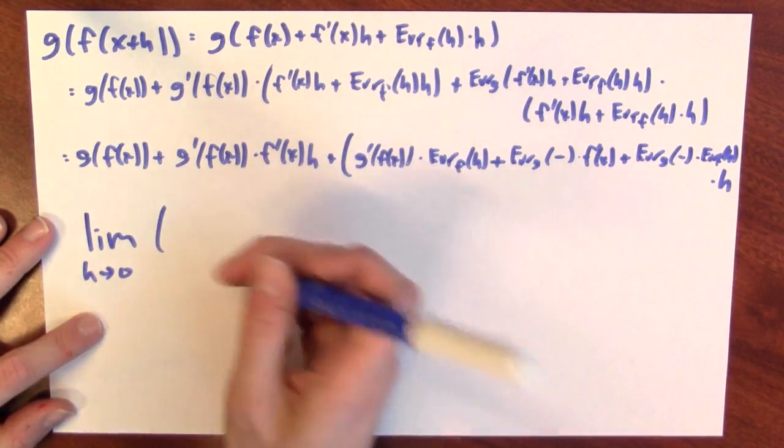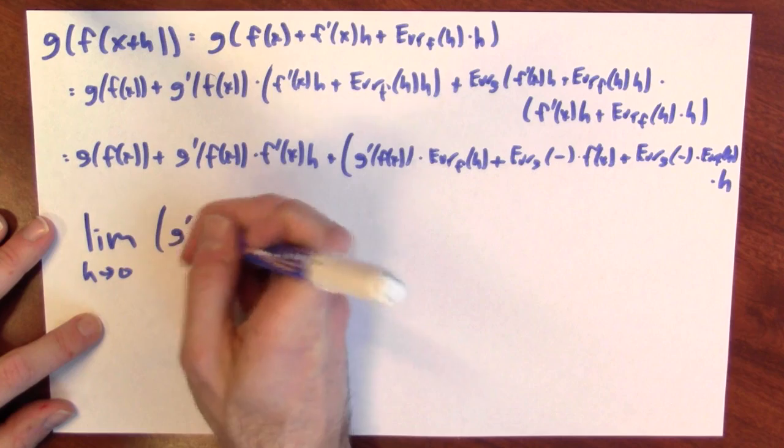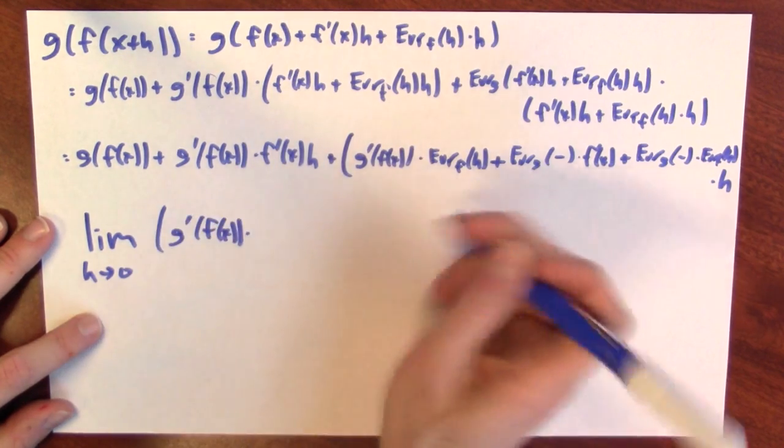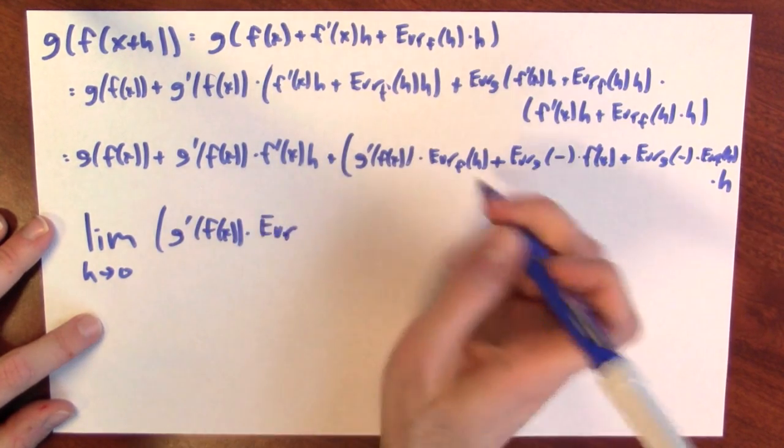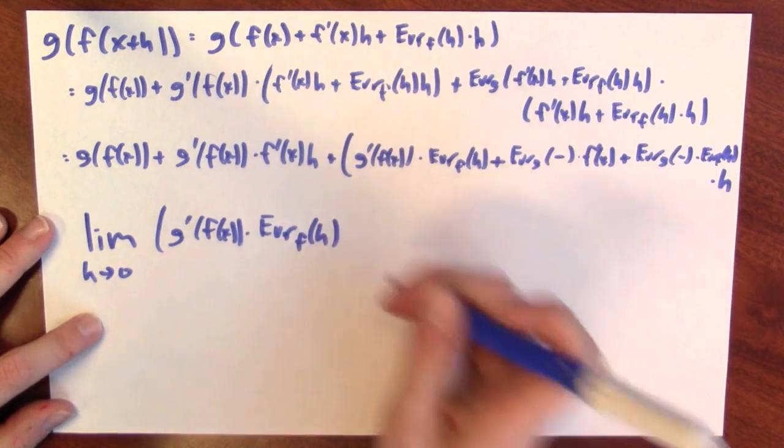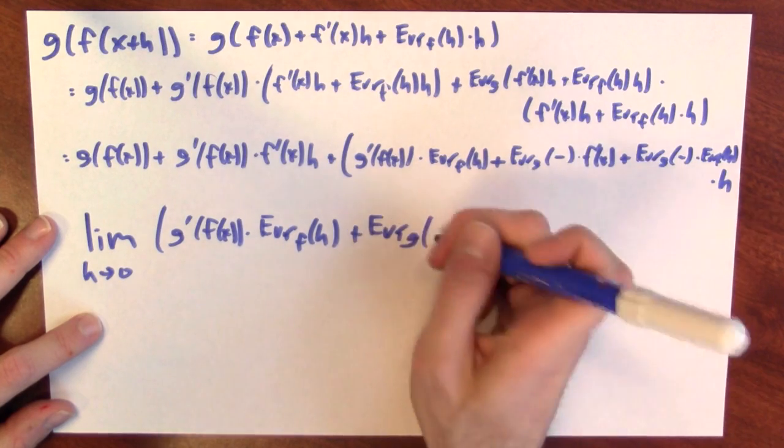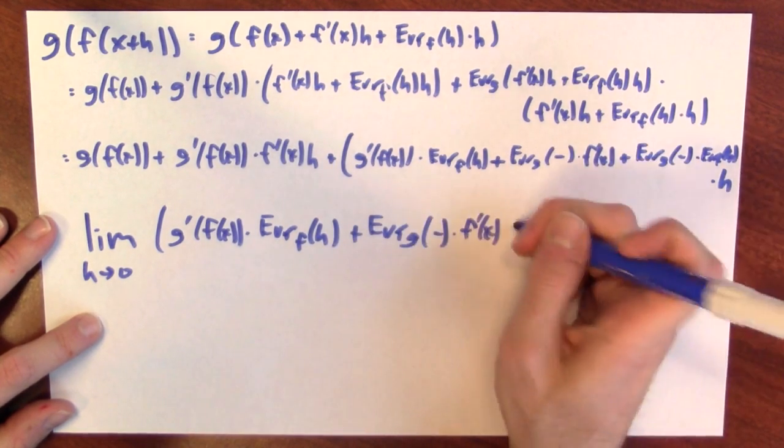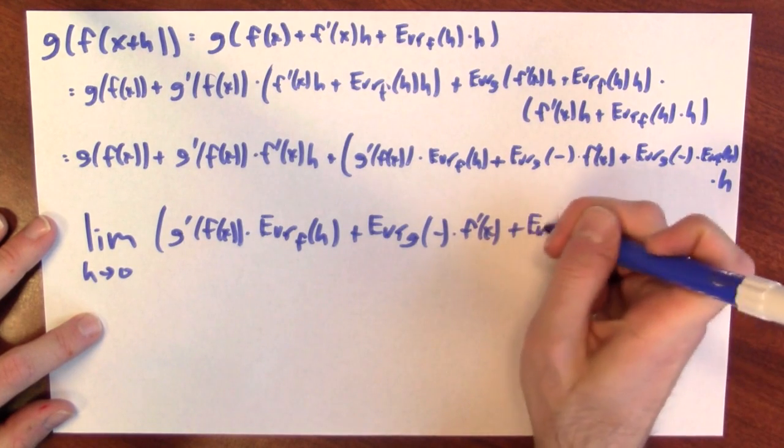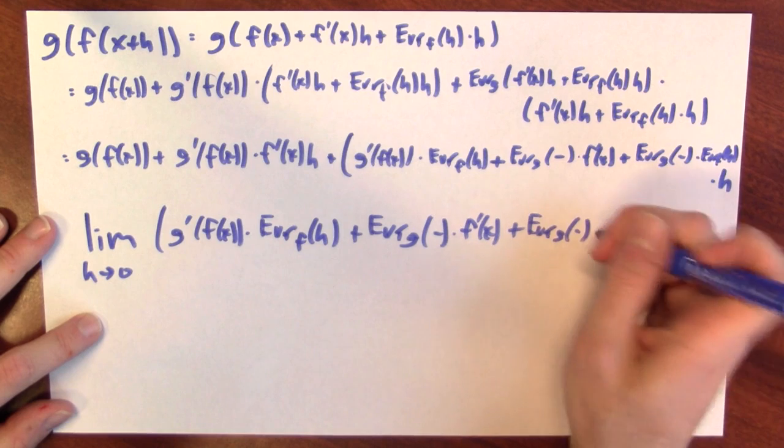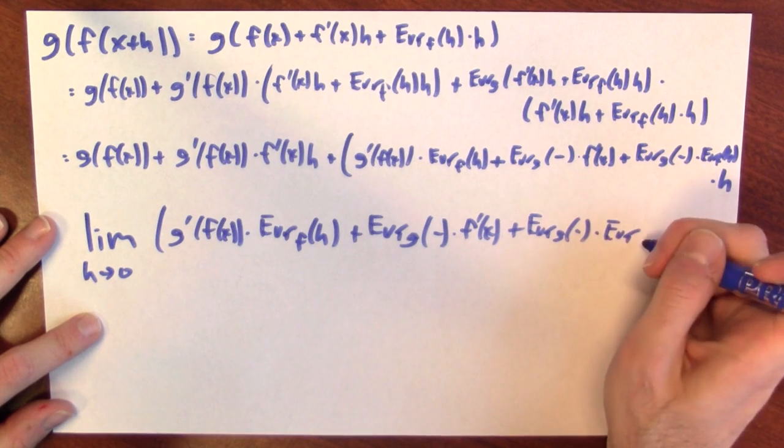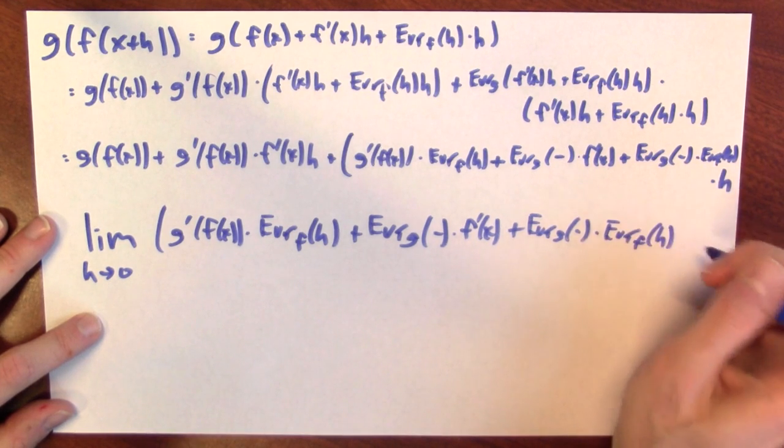And the error term, right, is the part before the times h, and it's g prime of f of x times the error term for f at h plus the error term for g times f prime of x plus the error term for g times the error term for f at h.